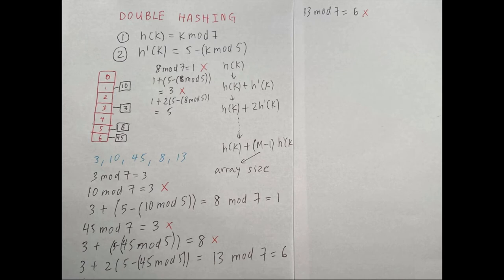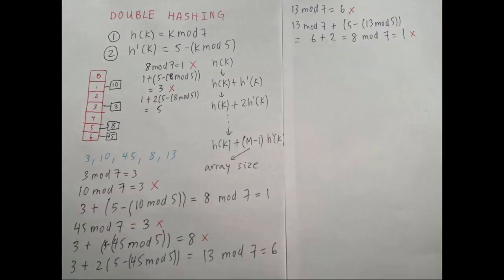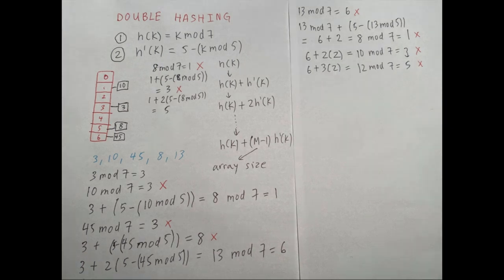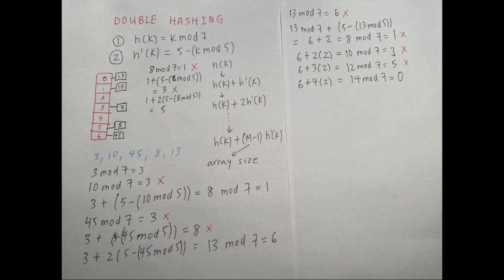Finally we deal with key 13: 13 mod 7 is 6, but index 6 is occupied by key 45. We add the secondary hash function and get 8 mod 7 = 1 — occupied. We add again: 10 mod 7 = 3 — occupied by key 3. A third application gives 12 mod 7 = 5 — occupied by key 8. A fourth application gives 14 mod 7 = 0, which is unoccupied, so we place key 13 at index 0.